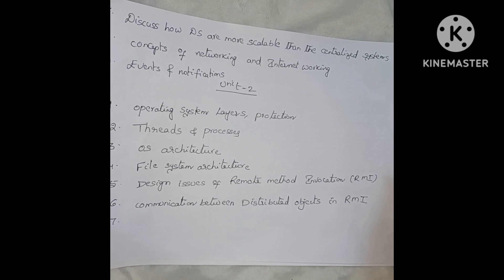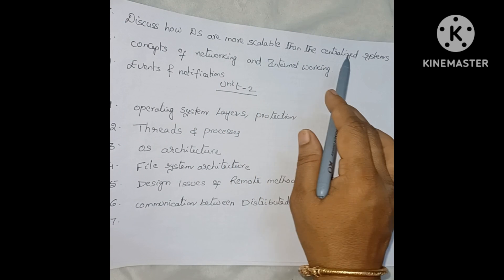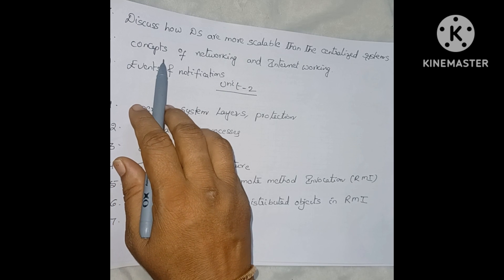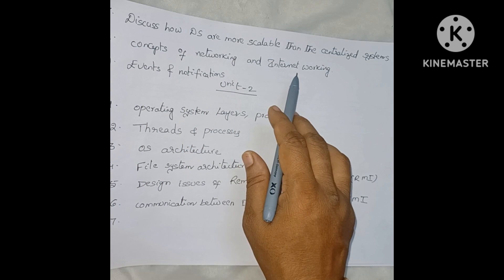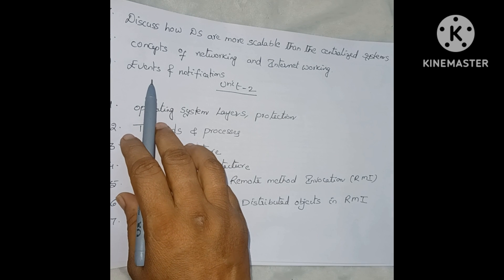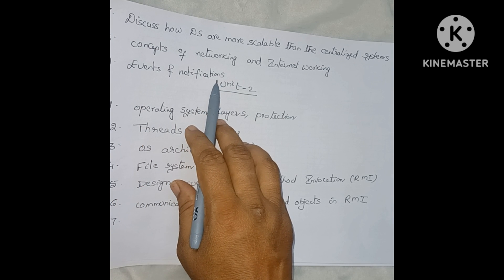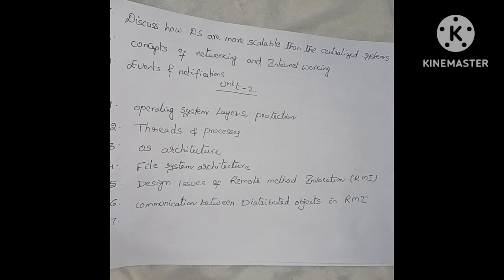That scalability question is application-oriented — you have to explain why distributed systems are more scalable than centralized systems. Next, read the concepts of networking and internetworking, which is a general question. Also, explain events and notifications in distributed systems. These are the important questions for Unit 1.